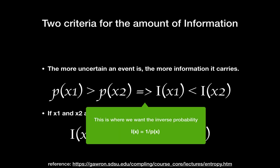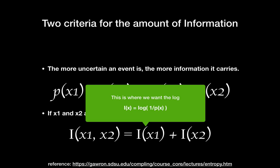For the first criteria, we can use the inverse probability. So, while p(x1) is greater than p(x2), I(x2) is greater than I(x1). And for the second criteria, we can use the logarithm. So, multiplication of the values can be transformed to adding values.